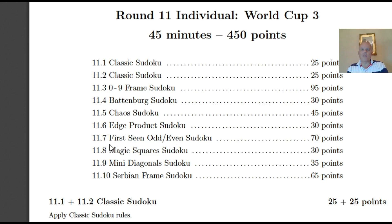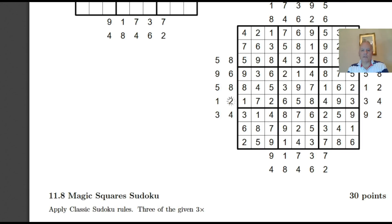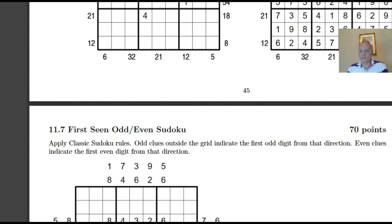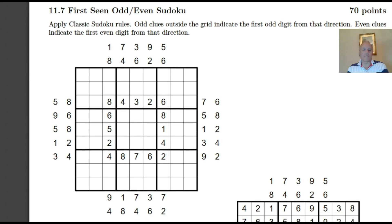So, I've chosen this First Seen Odd Even Sudoku, 70 points in the real competition. The actual competition puzzle, if you're going to solve them all, and very few people will, this should take you about seven minutes, given that it's 45 minutes in the round for 450 points. The example puzzle that they've provided is here, and this is the puzzle.